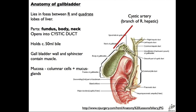In a few people, the bile duct opens directly into the duodenum via a second orifice, but that's quite rare. It enters the duodenum at the ampulla of Vater, where there's the sphincter of Oddi. Arterial supply is via the cystic artery, which comes from the right hepatic artery, part of the celiac trunk. Venous drainage is directly to the sinusoids of the liver.